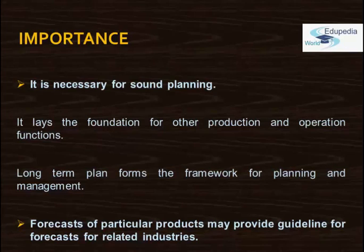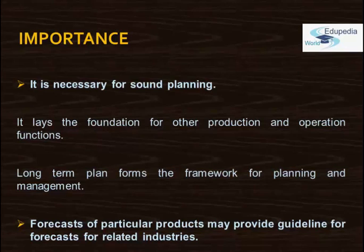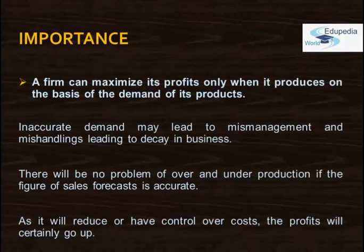At the national level, sales forecasts of particular products may provide guidelines for demand forecasting for related industries. For example, a demand forecast for cotton textiles may provide an idea of probable demand for textile machinery, ready-made garments, dyestuffs, and so on. The government, on the basis of sales forecasts, may decide whether imports are necessary to meet a deficit in home demand or may provide export incentives for any surplus. Thus demand forecasts are useful to the firm, the industry, and also to the government.